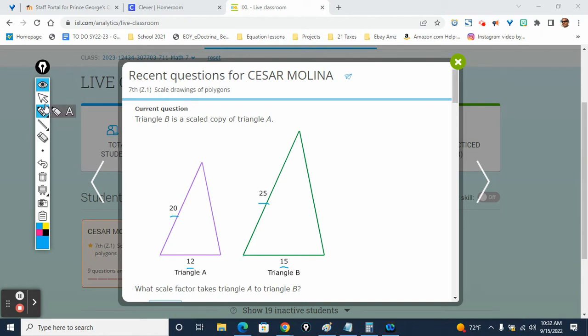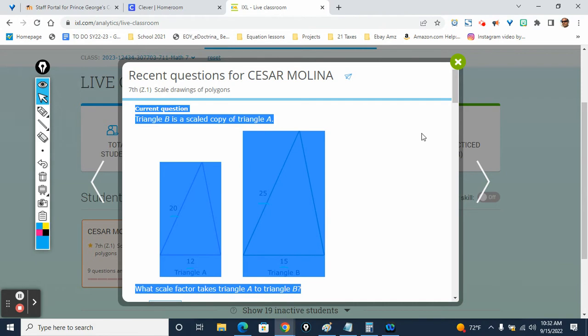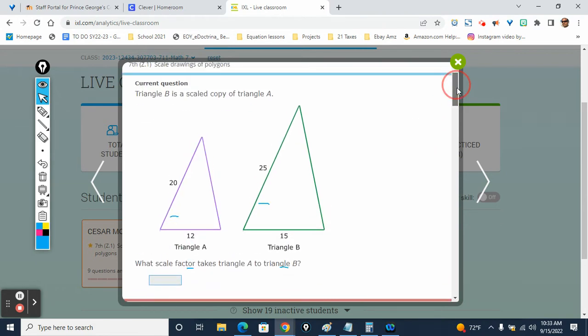Which one you want to work with? Pick the easiest numbers. Which do you think is easier? 20 and 25. All right, 20 and 25, he said. All right, so what we're going to do is 20 and 25. So scale factor is what would we multiply 20 by to equal 25?